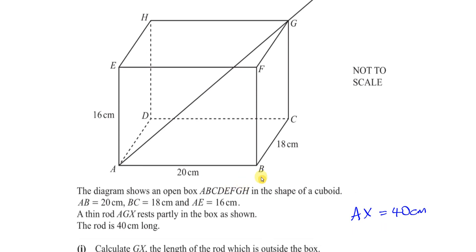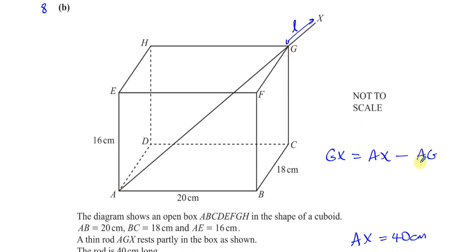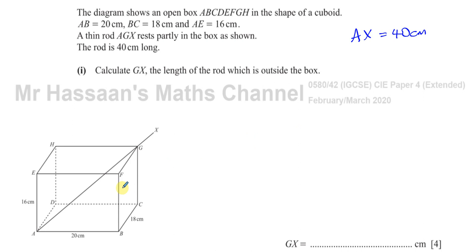We need to calculate GX — the length of the rod which is outside the box. GX is going to be the whole length AX minus the part inside the box, which is AG. So if I find AG, I can subtract it from 40 to get what I need for part one. I have a copy of the diagram to work from, so we need to find the length AG.